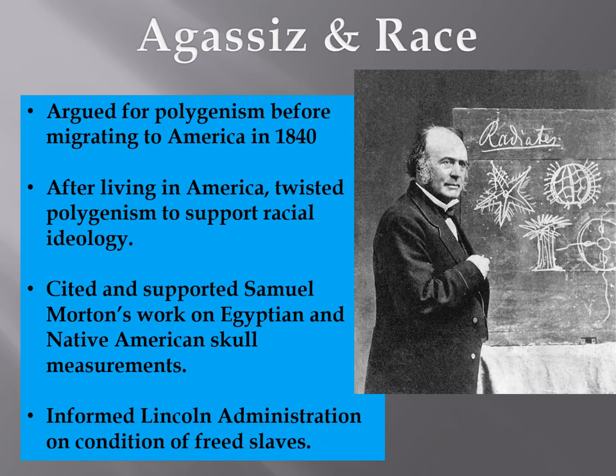Agassiz argued for polygenism before migrating to America in 1840. After living in America, he twisted this notion of polygenism to support racial inferiority ideologies. He cited and supported Samuel Morton's work on Egyptian and Native American skull measurements, though he did not agree with Morton's monogenist conclusions — he used the physical measurements to prove that people of color were inferior. He was actually prominent within the Lincoln administration to inform on public services to be extended to freed slaves, which is troubling given his ardent racism.